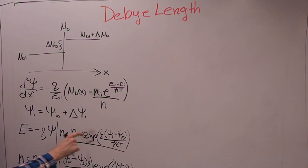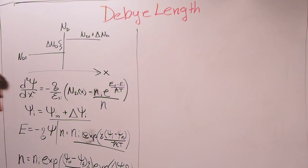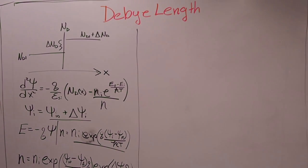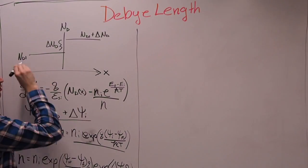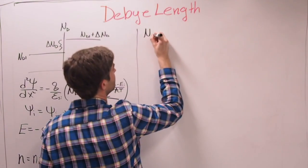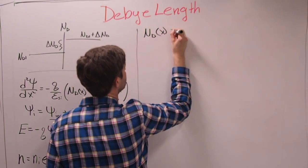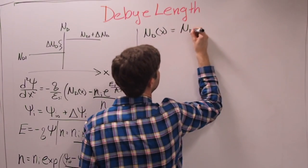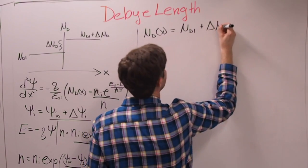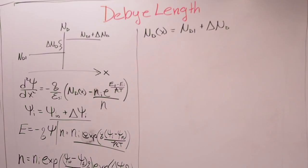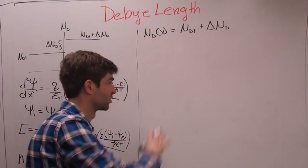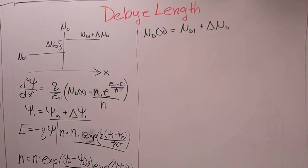By the way, the second order Taylor series expansion, exponential delta phi I Q over KT, Taylor series expansion, that is just going to be one plus Q over KT delta phi I.